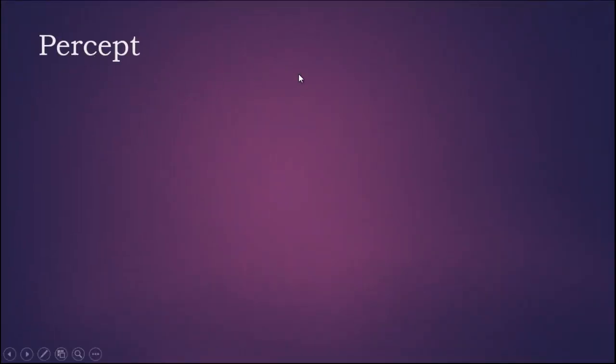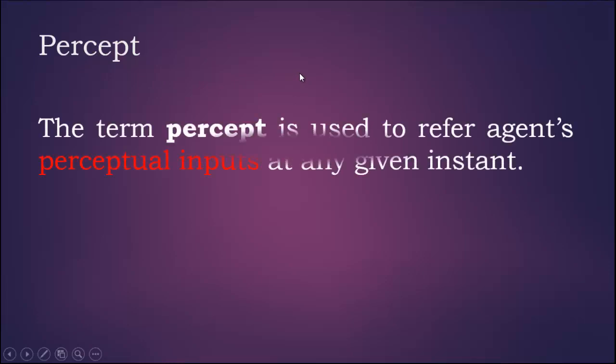What is a percept? The term percept is used to refer to an agent's perceptual inputs at any given instant. In AI, the inputs will be in terms of perceptions, just as human beings are taking inputs from the world. The same perception may be different for different people.